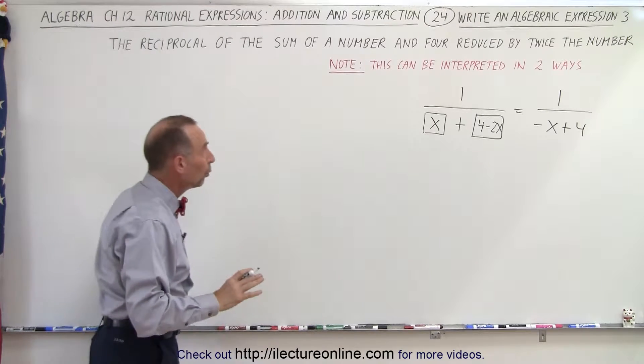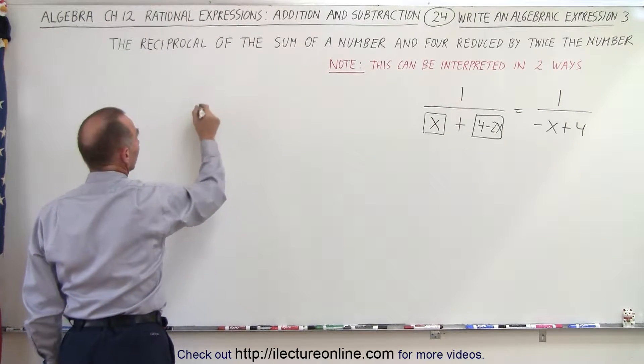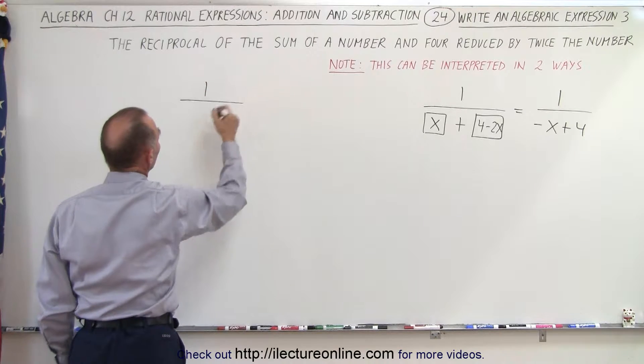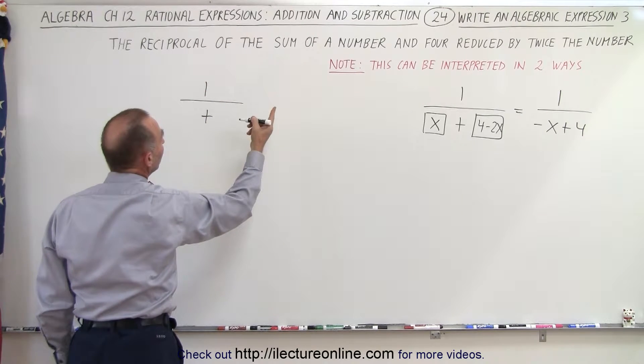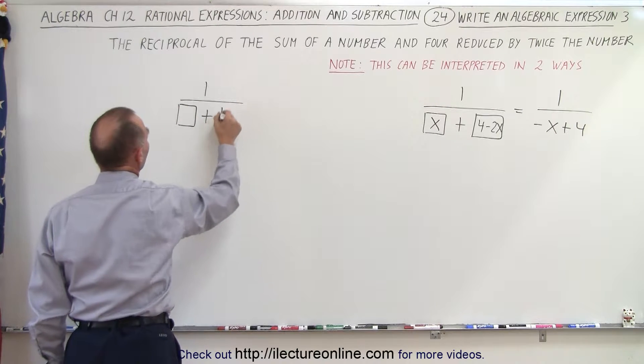Or we can interpret it this way: the reciprocal, one over the sum of two things, of a number and 4.